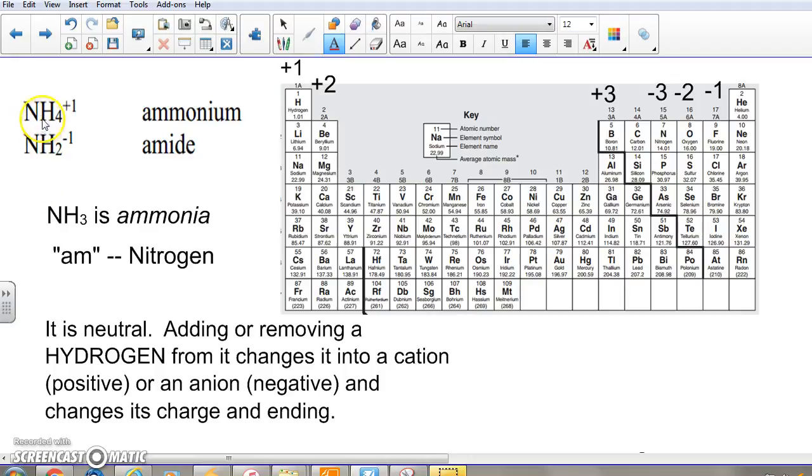Positive ammonia gets that 'ium' ending so common with positive ions like lithium, sodium, magnesium, beryllium, potassium, calcium. So we have a positive ion by adding an H to ammonia.